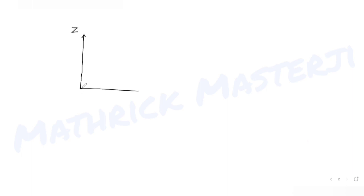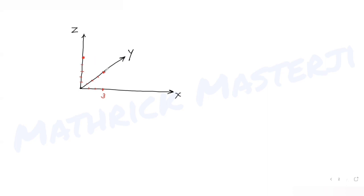Let's say this is my z-axis, this is my x-axis, and the third dimension going into the screen is the positive y-axis. I've been told the lengths of edges along x, y, and z axes are 3, 4, and 5. So for x it is 3 units, for y it is 4 units, and for z it is 5 units.